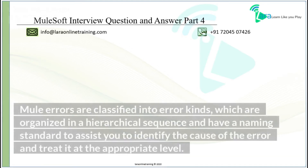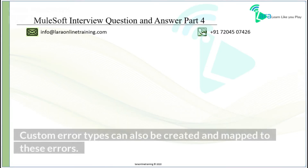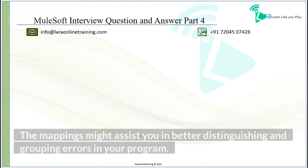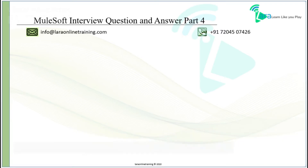Mule errors are classified into error kinds, which are organized in a hierarchical sequence and have a naming standard to assist you in identifying the cause of the error and treating it at the appropriate level. Custom error types can also be created and mapped to these errors. The mappings might assist you in better distinguishing and grouping errors in your program.